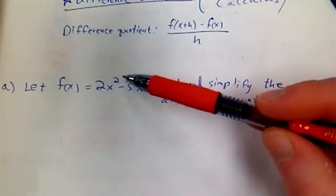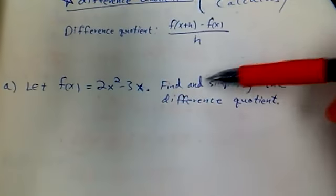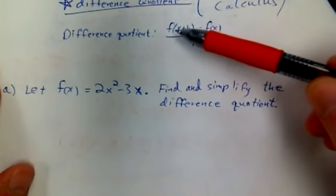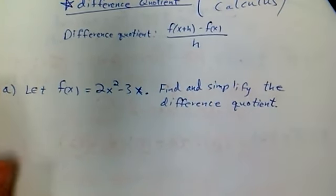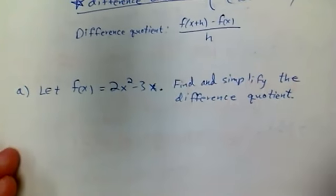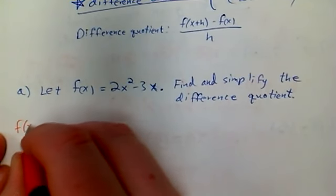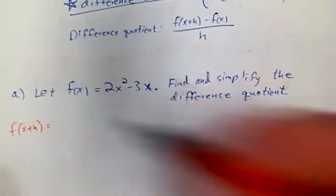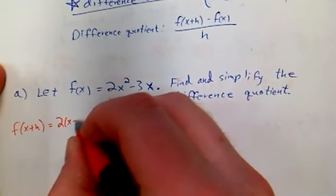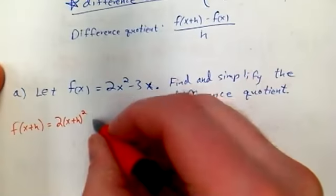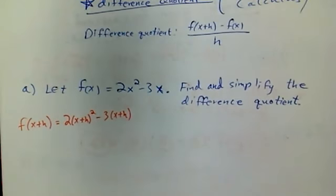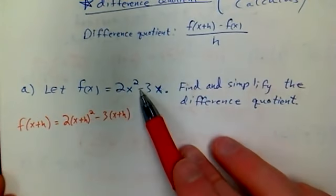Let f(x) equal 2x squared minus 3x. Find and simplify the difference quotient. So essentially what I want to do is I want to find all these pieces and simplify. So let's start with this. What is f(x+h)? That's the first thing I want to know. Well, in our case, that's 2 times (x+h) squared minus 3 times (x+h). See where I got that? Here's my f(x). I just made f(x+h).